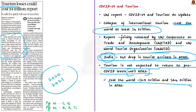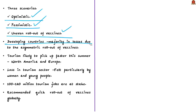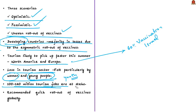The cost to the world in the current year is estimated between 1.7 trillion and 2.4 trillion US dollars, based on three scenarios: optimistic, pessimistic, and considering an uneven rollout of vaccines. Developing countries will account for the majority of losses due to the asymmetric rollout of vaccines. Tourism is likely to pick up faster in North America and Europe where vaccination rates are higher. The loss will be particularly felt by women and young people, since the sector employs significant proportions of these populations. Around 10 to 12 crore tourism jobs are at stake.